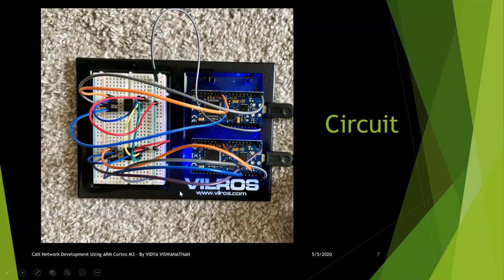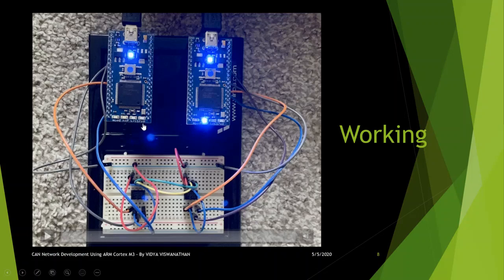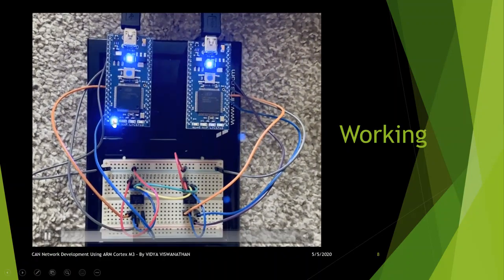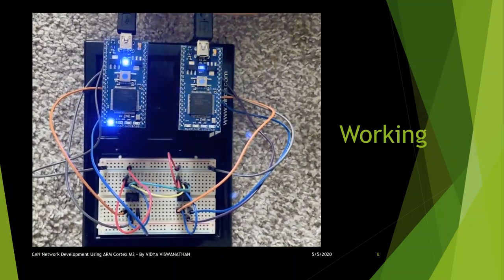The Mbed board has four LEDs at the bottom, numbered one, two, three, and four. Whenever the transmitter sends a message, LED one toggles, and whenever the receiver receives the message, LED two of the receiver toggles. The board on the left is the transmitter and the board on the right is the receiver. You can see that LED one of the transmitter and LED two of the receiver get toggled at regular intervals, confirming that message transmission through the CAN bus is taking place between these two ECUs.